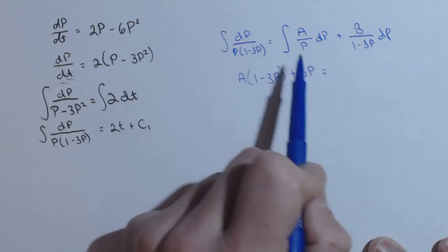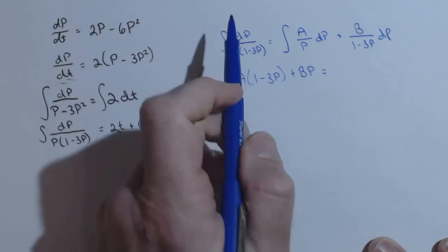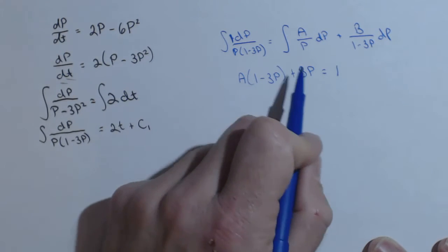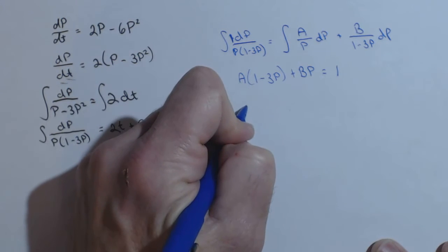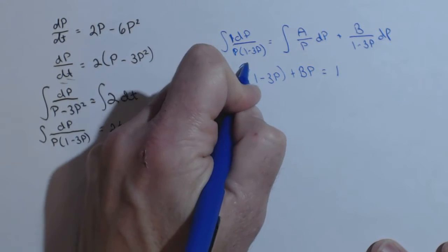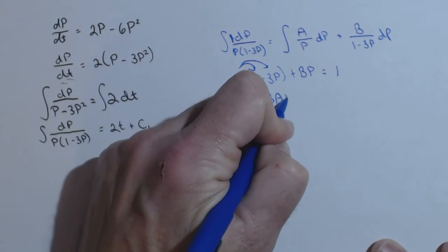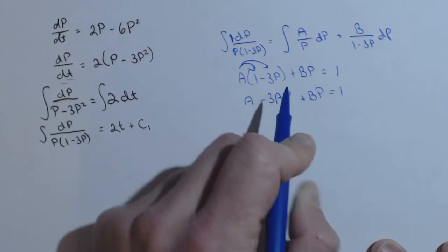And that would give us, so basically we're just looking at the denominators if we added those together. And basically those added together should just be equal to 1. So that's going to set up our system of equations. I'm going to foil the a through. So a times 1 is a minus 3ap plus bp equals just 1.